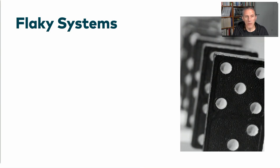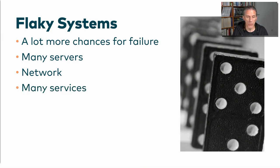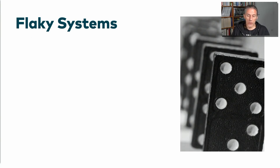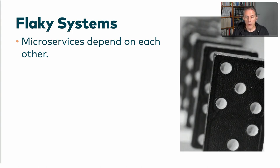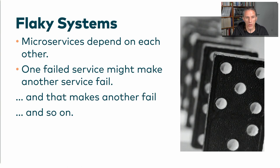If you have a deployment monolith running on one machine, there is just one machine and one process that can fail. In a microservices system, there is the network, a lot more servers, a lot more services — so there are many more chances for something to go wrong. Microservices will depend on one another, and there is no way around that, because at the end of the day there should be one system made out of microservices. One failed service might make another fail, then another, just like domino pieces.